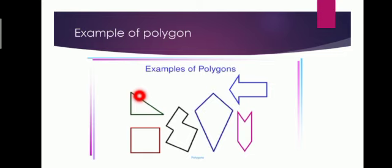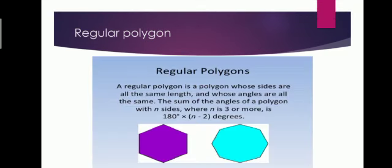Level 6, can you tell me: is the star a polygon? The definition of a regular polygon: a regular polygon has all sides equal and all angles equal.